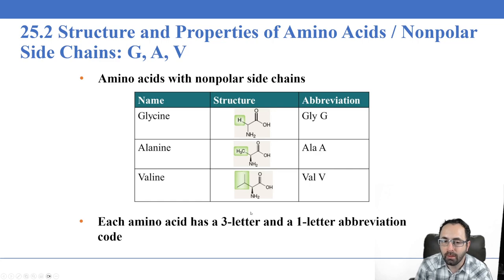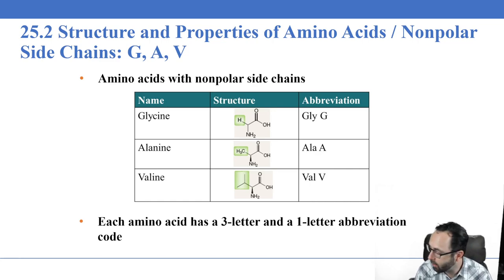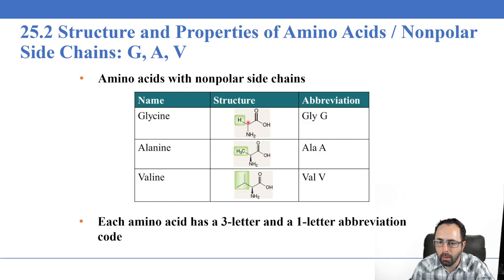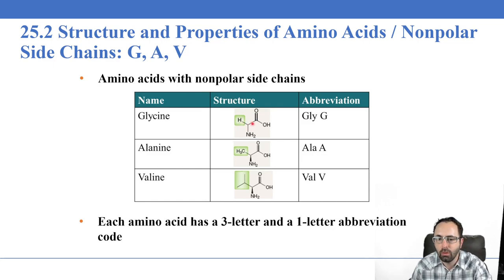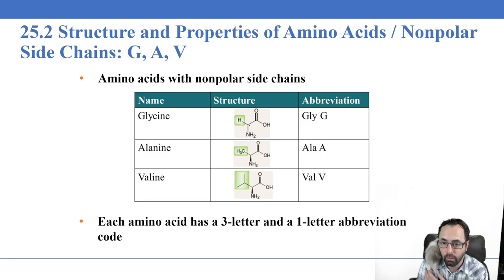Now we're going to go through all 20 of the amino acids that make up our bodies and those of other animals. These are drawn a bit differently, but you can see the carboxylic acid group, the amine group, and the alpha carbon. All of the amino acids are chiral except for glycine. Glycine is not chiral because it has two hydrogen atoms attached to the alpha carbon — the other hydrogen atom isn't drawn, but it's there. All other amino acids will have one hydrogen attached, but glycine has two.